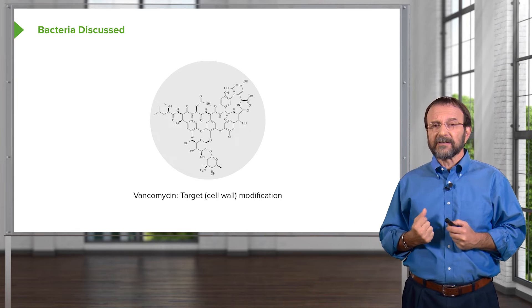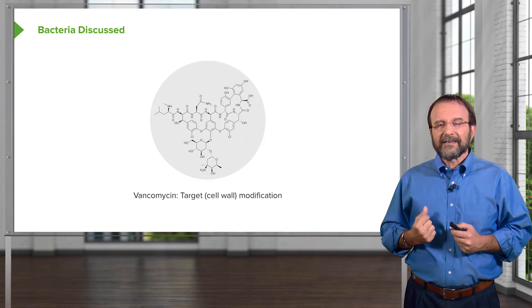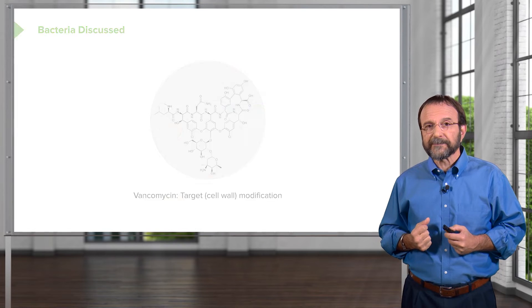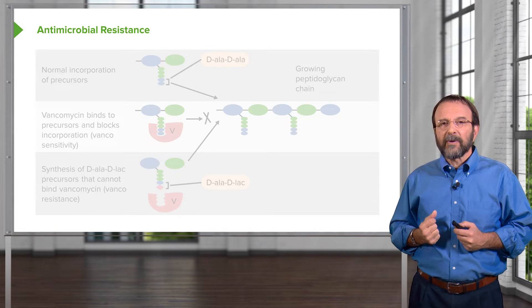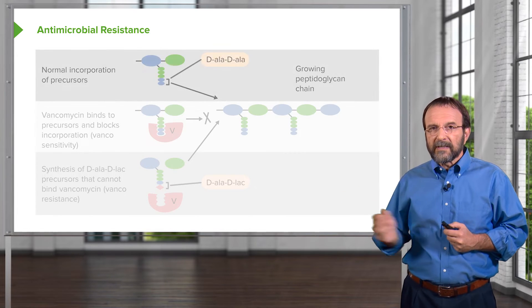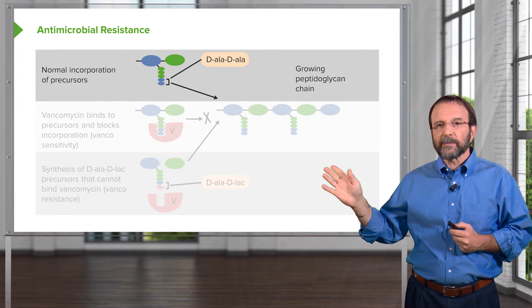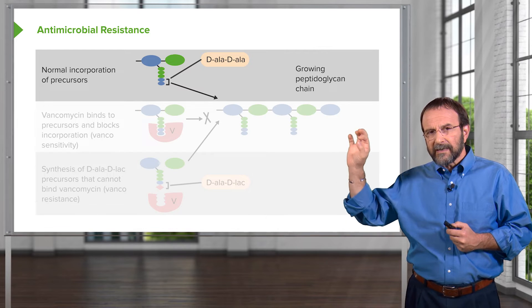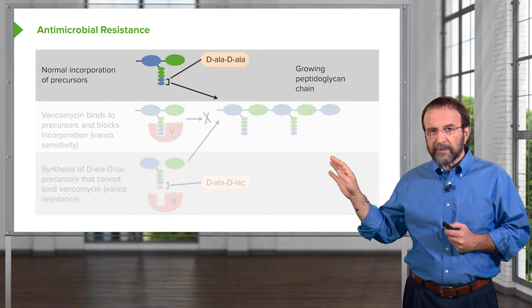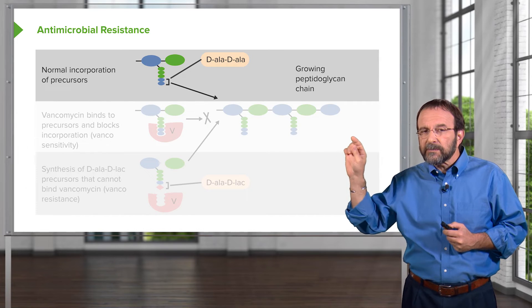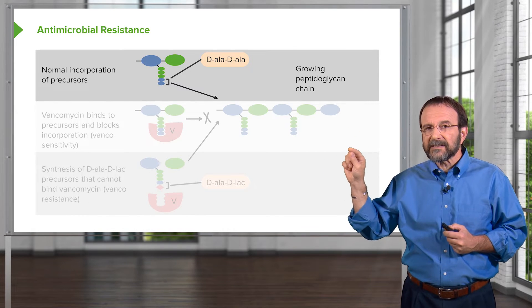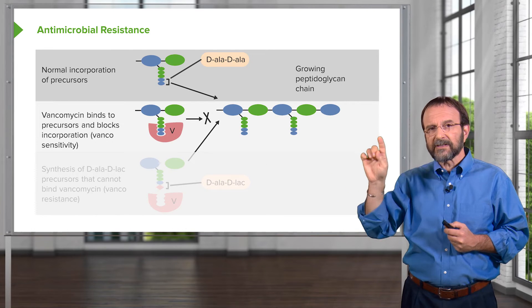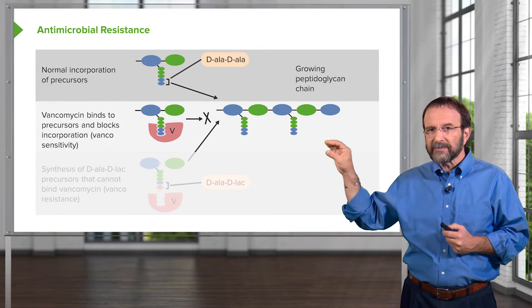Let's take an example to illustrate that — the antibiotic vancomycin, whose target is cell wall modification. Vancomycin acts by blocking the assembly of the murein cell wall. At the top of this slide is the normal incorporation of murein precursors. The blue and green ovals are sugar molecules that will be part of the growing peptidoglycan chain, and the smaller ovals below them are amino acids that will eventually cross-link the murein to make it very strong. Subunits are added to the growing chain.